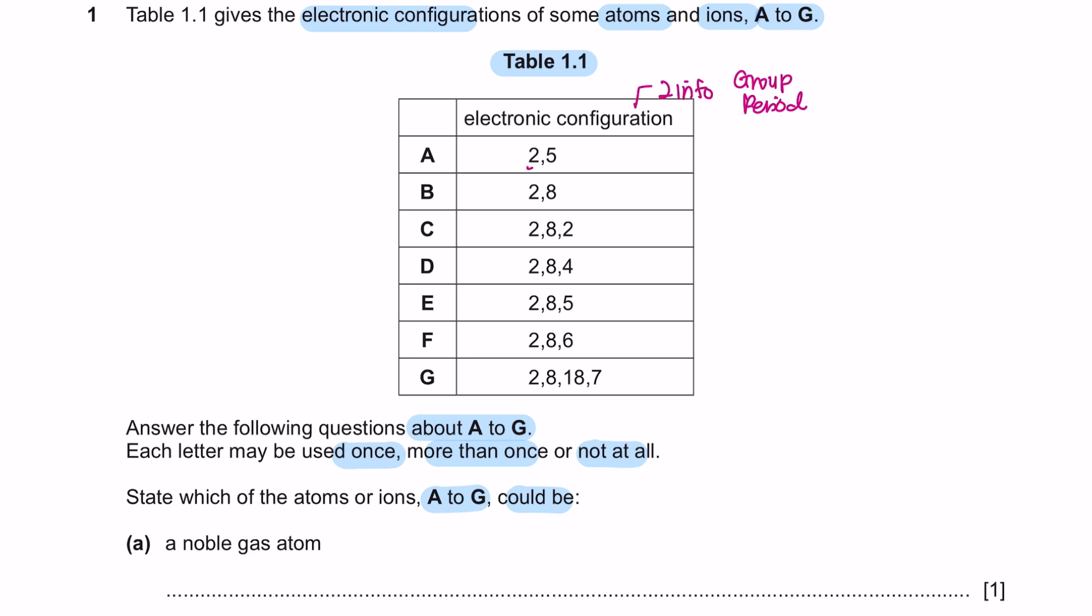For instance, there are two shells in atom A, meaning that this will be in period 2, and since the valence electron is 5, this will be in group 5. For instance, for atom E, it has three shells, therefore it will be in period 3, and the valence electron is 5, so it will be in group 5. I'm just going to write down the group numbers at the side of each atom.